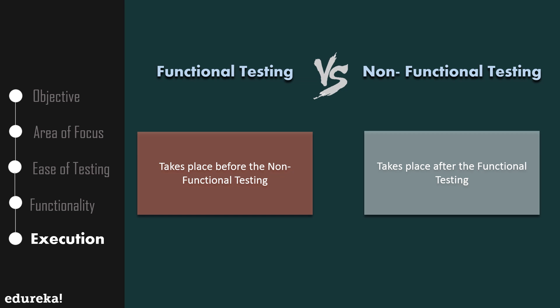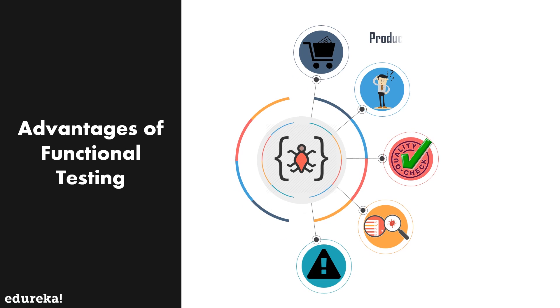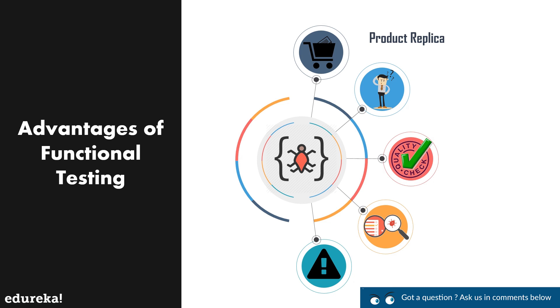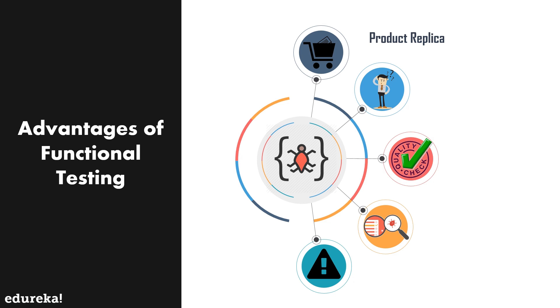Now let's have a look at some of the advantages of functional testing that make it more preferable. This testing reproduces, or is a replica of, what the actual system is — basically a replica of what the product is in the live environment. Testing is focused on the specifications as per the customer usage, such as system specifications, operating system, browsers, etc. Also, it does not work on any assumptions about the structure of the system — there are no assumptions for this testing.